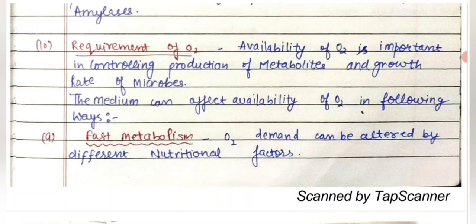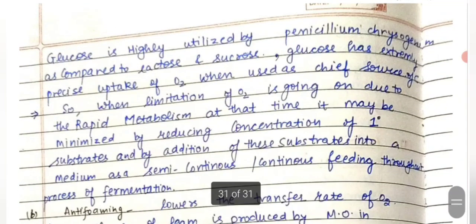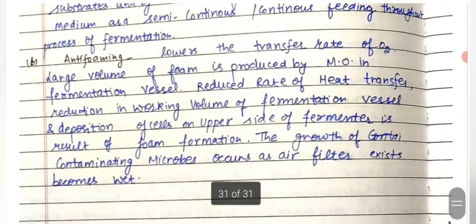Oxygen availability is important for the metabolism of the microorganism. The medium can affect oxygen availability in several ways. Oxygen demand can be altered by different nutritional factors. Glucose is highly utilized by Penicillium chrysogenum compared to lactose and sucrose, resulting in an extremely precise uptake of oxygen when used as the chief carbon source. When oxygen limitation occurs due to rapid metabolism, it may be minimized by reducing the concentration of primary substrates and by adding them through semi-continuous or continuous feeding throughout fermentation.